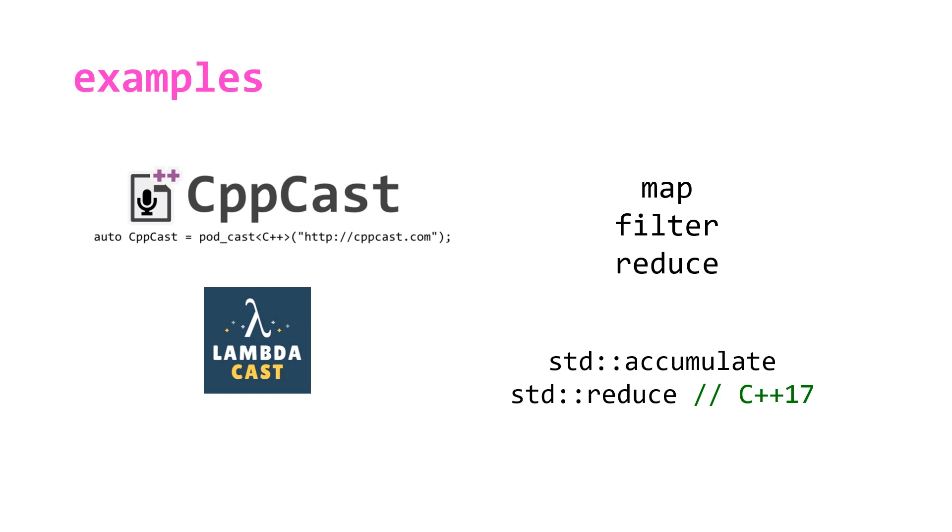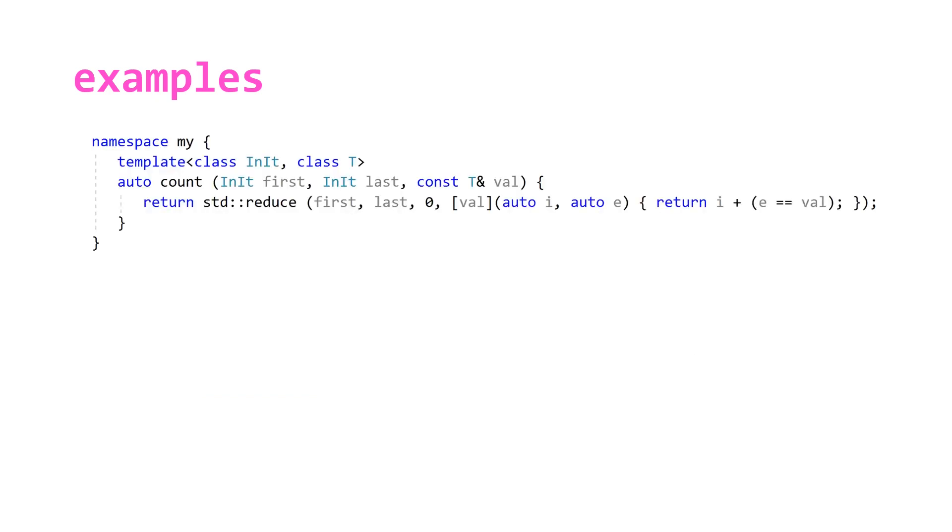Now with std::reduce we can write more sort of functional code. Taking a look at what this might look like I have a namespace here just to disambiguate this from the std::count and it looks very similar but instead of in here actually checking our value we're just calling std::reduce with the same two